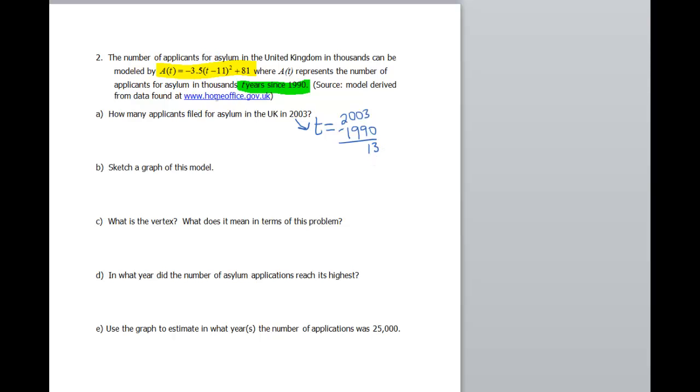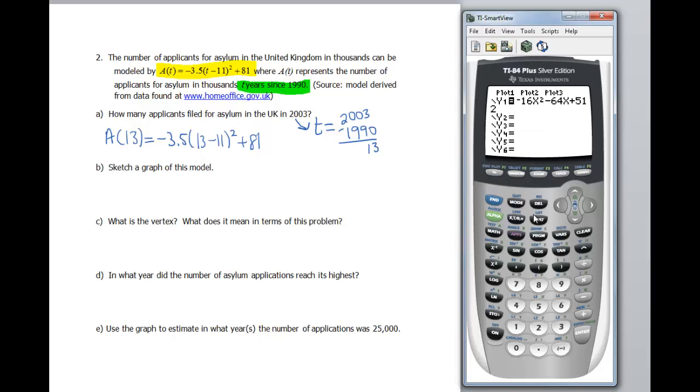So we can plug 13 into the formula, or again, we can go ahead and graph it, and take a look at the calculator, let the calculator do the work for us. Or we can just do it by hand, either way. So what this would look like then, would be a of 13, because that's our t, would be negative 3.5 times 13 minus 11 squared, plus 81. And this is just some number crunching. But like I said, I'm gonna go ahead and put it into my y equals. Let's clear out the last one we just did. So I've got negative 3.5 parentheses.